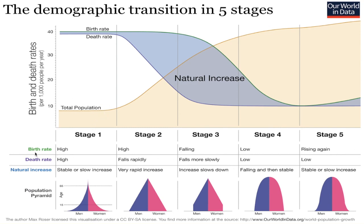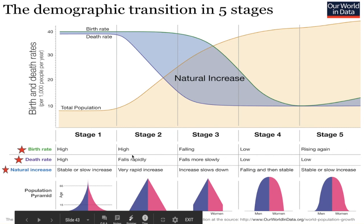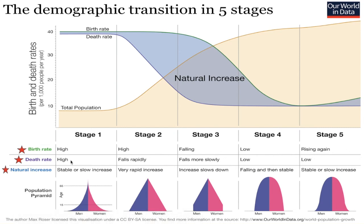Now, we could look at stage one and say, hey, birth rate is very high, death rate is also very high, and total population stays pretty low. But you can also see down here it gives you those three things — birth rate, death rate, and natural increase. So we can use those either on the graph, or for example, if you were told that a country was experiencing both high birth rates and high death rates, you can see as you move across that no other stage has both of those things being very high.